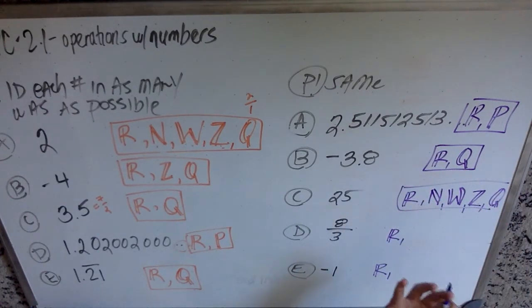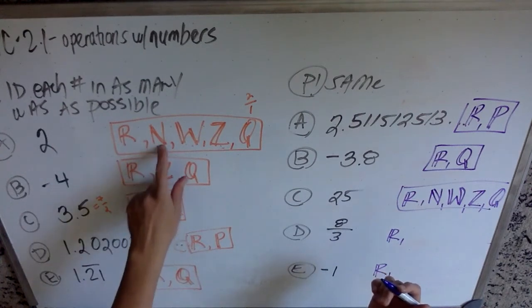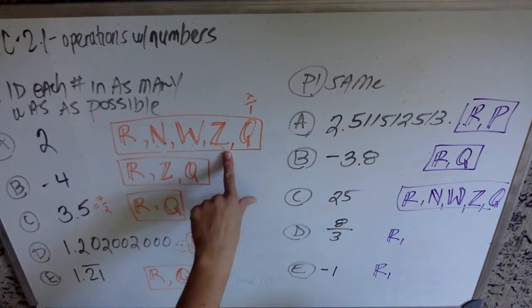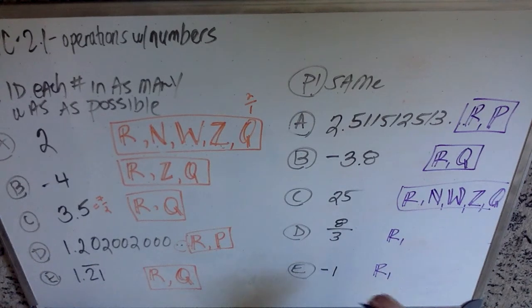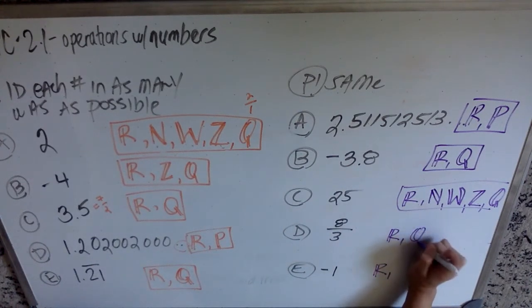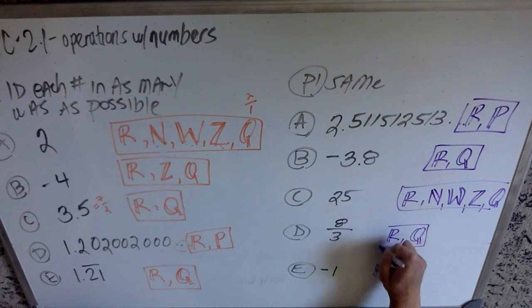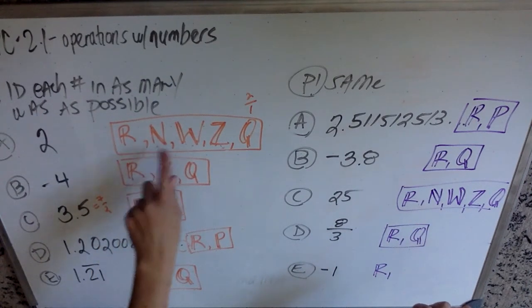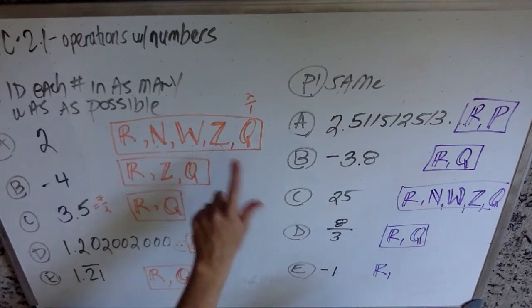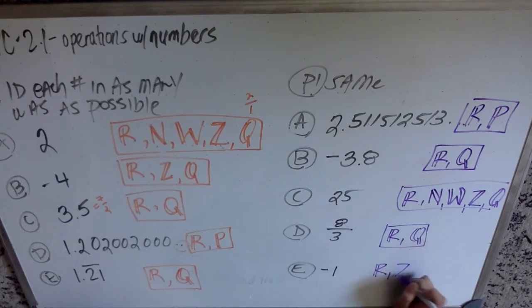8 thirds is already written as a fraction. It's not going to be any of these things, because it doesn't simplify to a nice happy number in front of a decimal. 8 thirds is just going to be R and Q. And negative one is going to be a real number. It's not a natural number or a whole number, though, and then it'll be an integer and a rational number. So, we're going to have a Z and a Q.